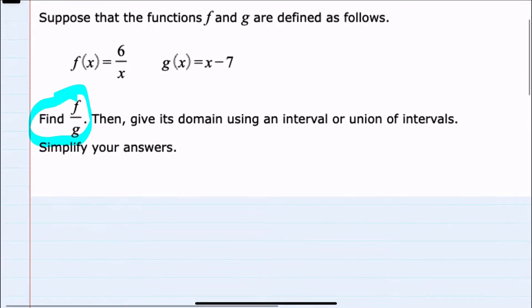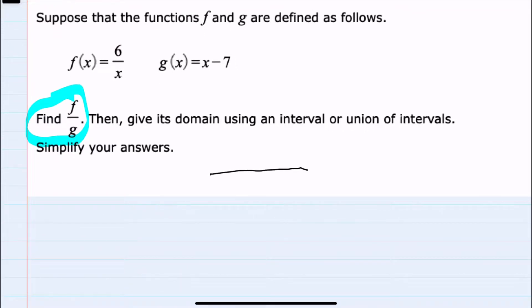So I'll start just by saying that f divided by g is a quotient where in the numerator we would have f of x, which is here 6 over x, and in the denominator we would have the g function, which here is x minus 7.